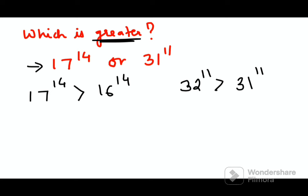When you look at these questions, you see that 17 is very close to 16 and 31 is very close to 32. And 16 can be written as 2 raised to 4, the whole raised to 14. And 32 can be written as 2 raised to 5, the whole raised to 11.